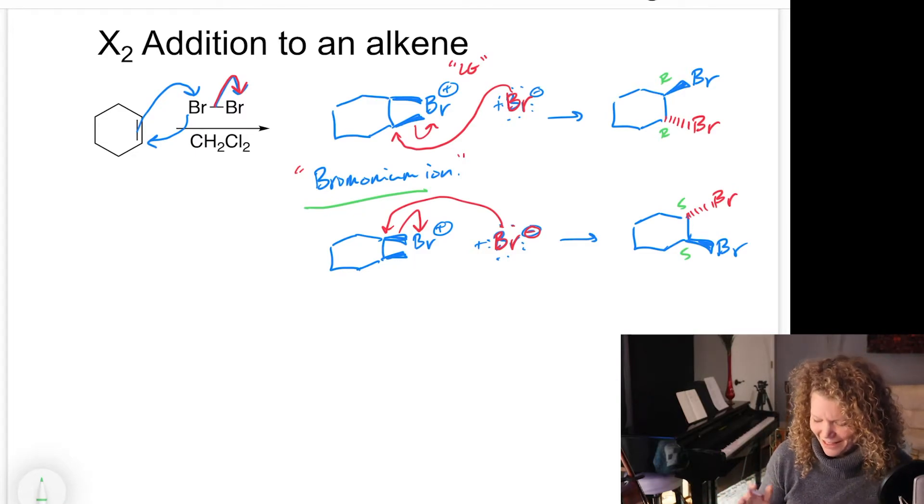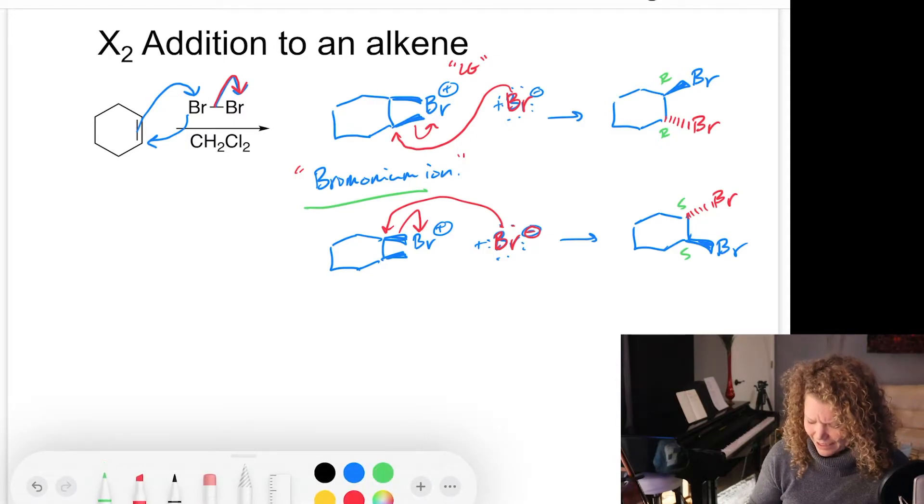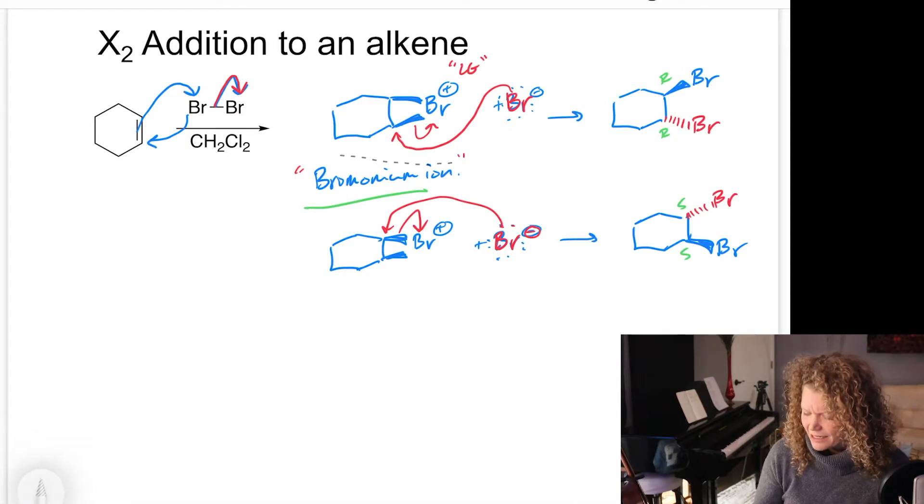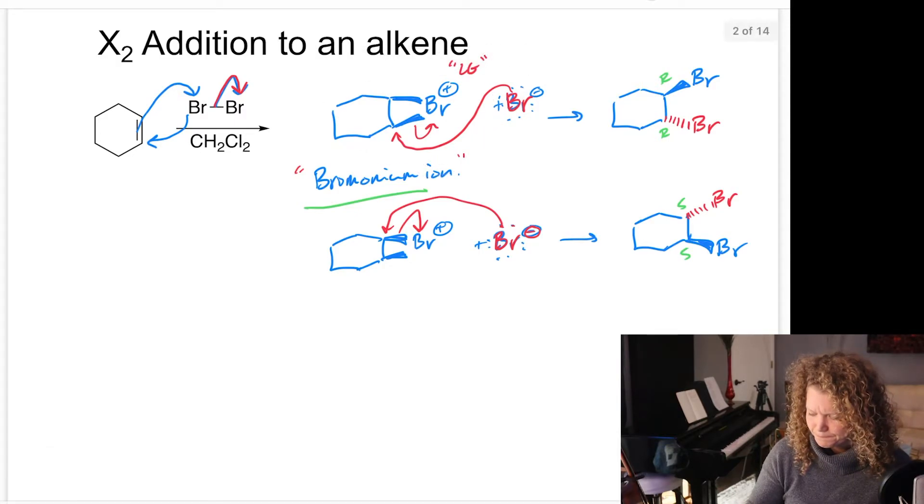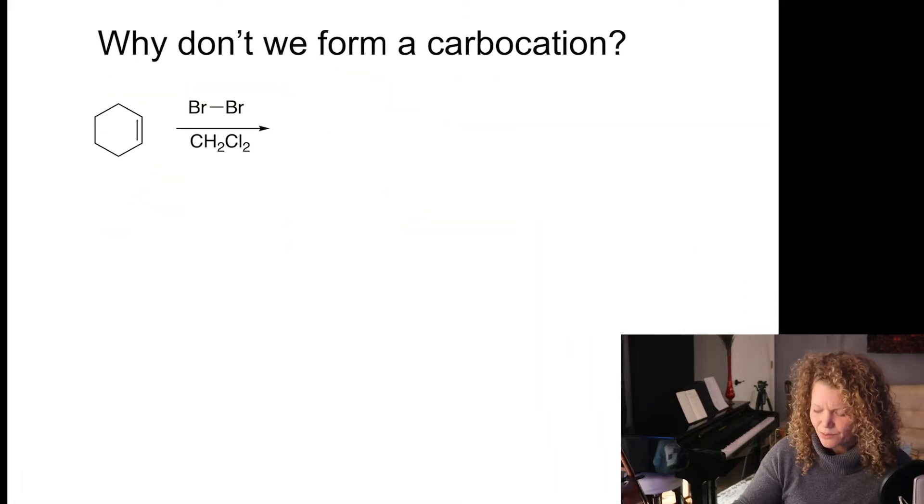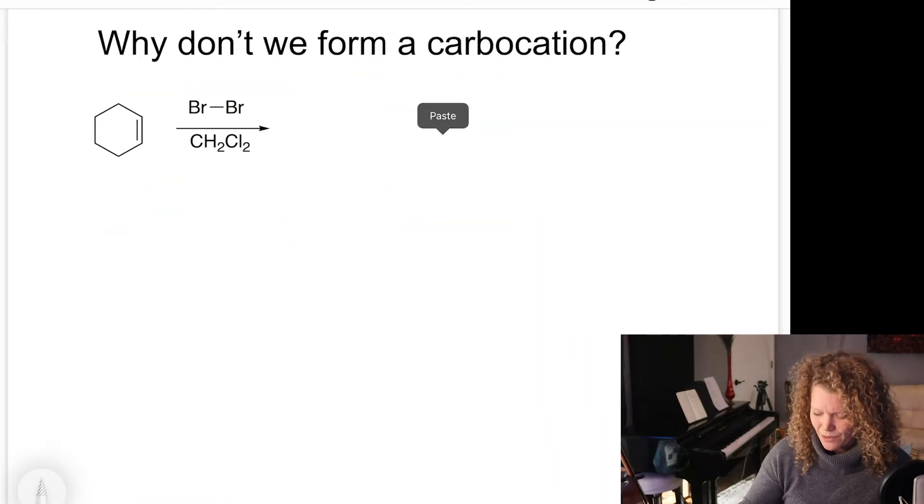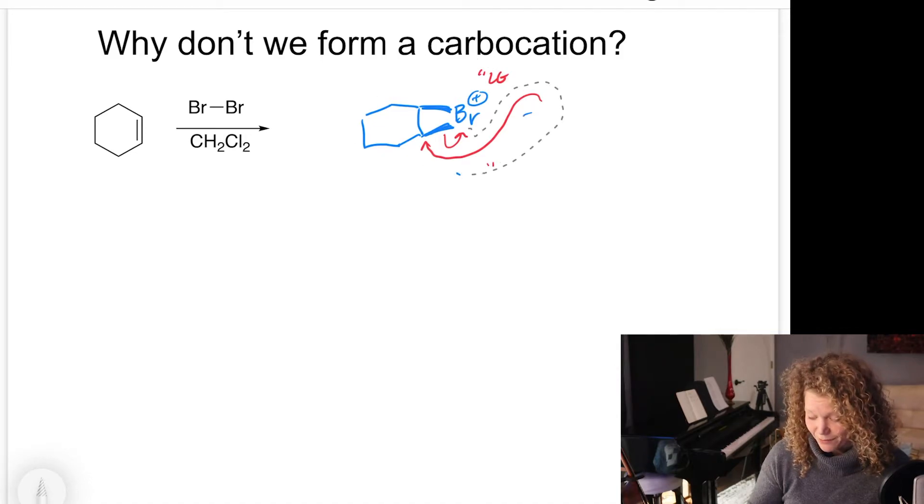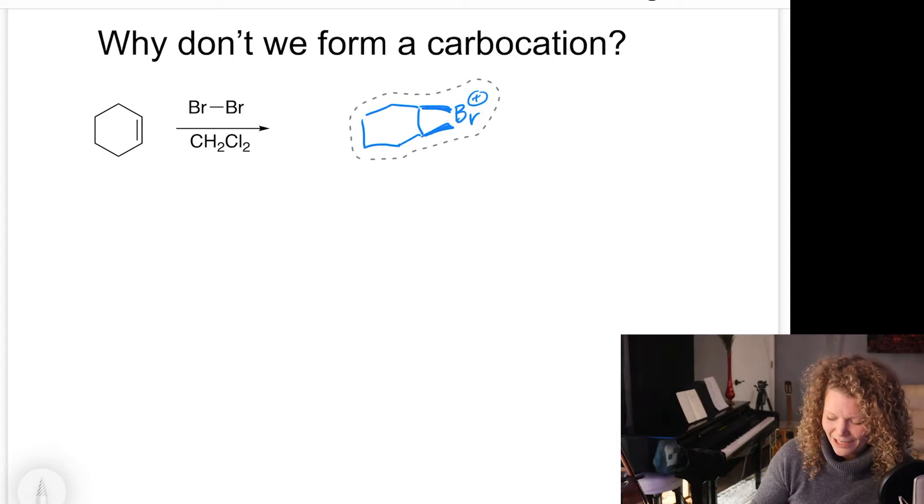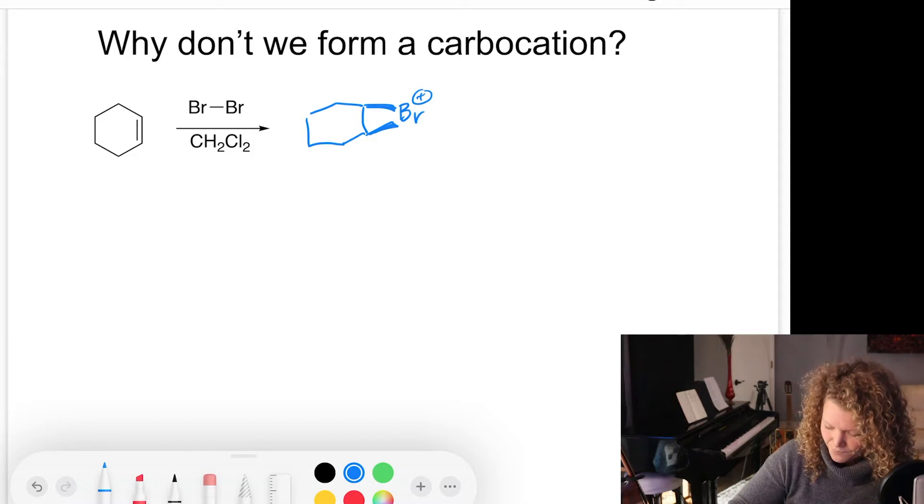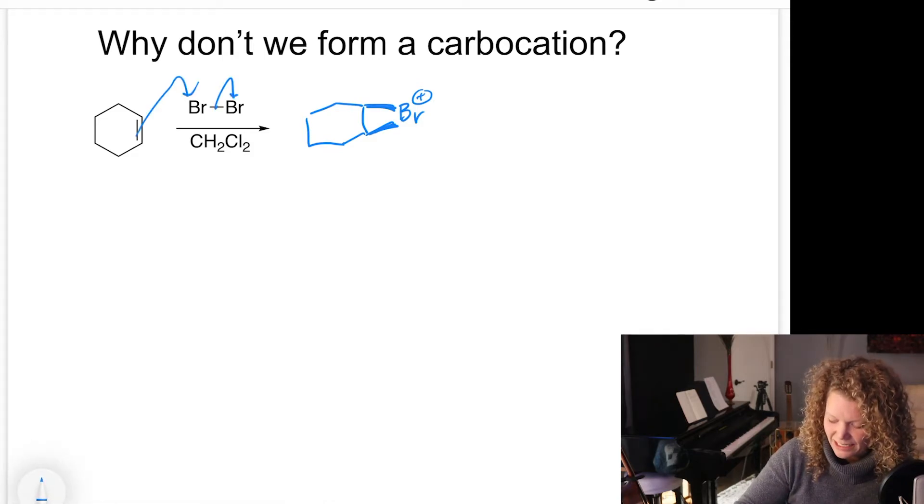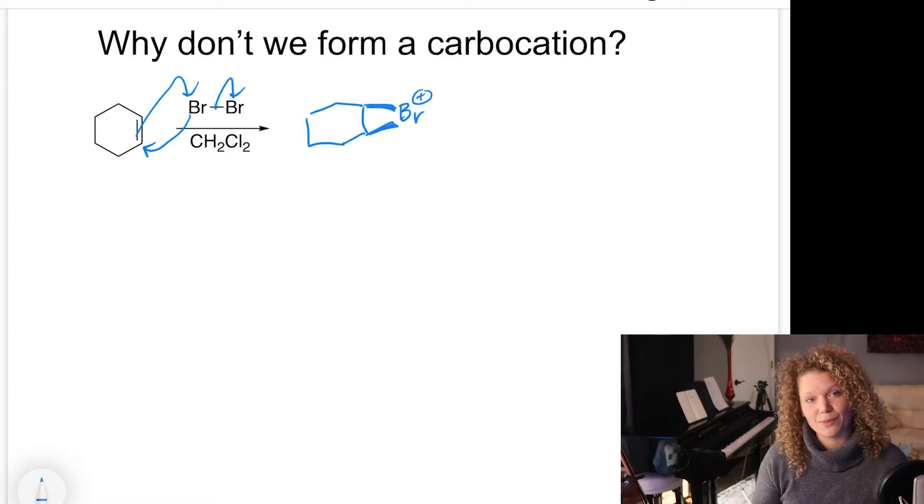Now you could also imagine the bromine ion could be formed on the bottom and you could walk through that exercise and see that you still get the same two products here. Now the key here that I really want to ask is why does this bromonium ion even form? You might be thinking to yourself, what if we just formed a carbocation? So I'm going to take this bromonium ion here and let's look at this reaction in a little more depth so we can kind of understand this intermediate of why it's even forming.